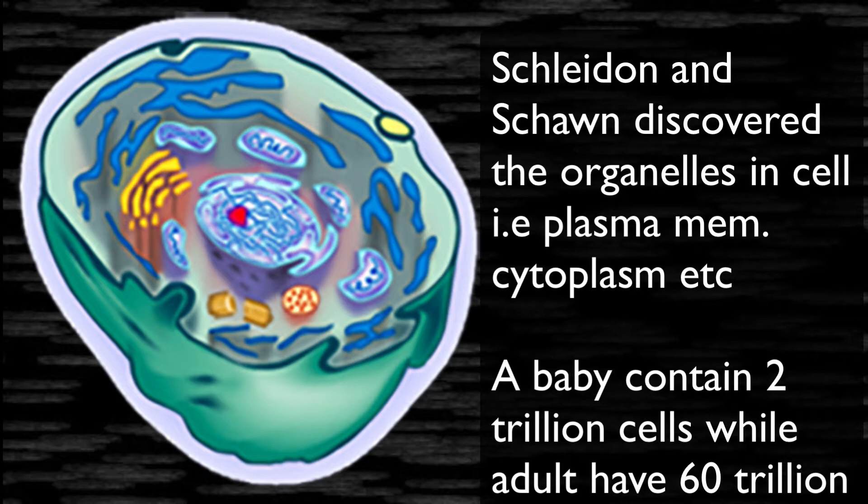Membrane-bounded organelles are small mechanical or functional structures. If we take an example of our body — this is our body, and inside the body we have organs. Likewise, a single cell is very functional: it acts as a body, and inside it we have many organs known as organelles. The fluid inside the cell, which we call cytoplasm, was also discovered by Schleiden and Schwann.